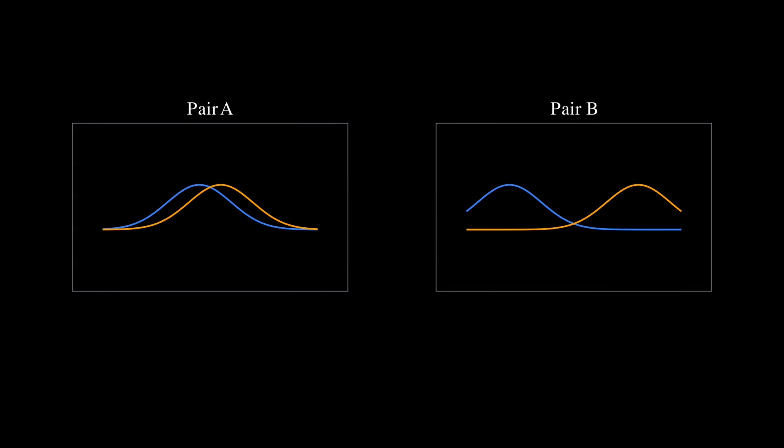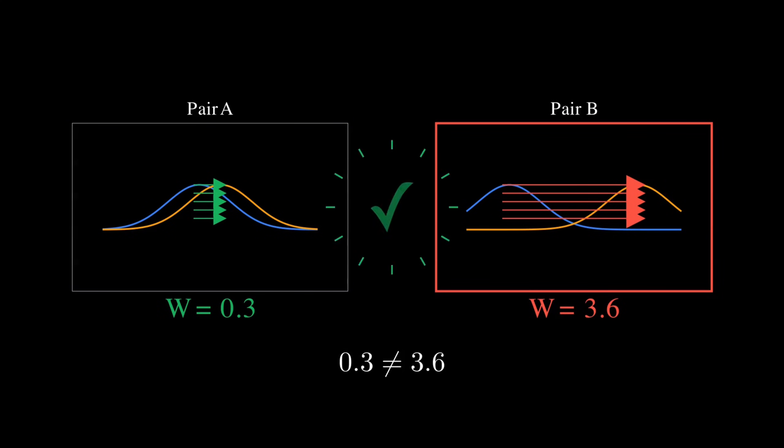Now let's revisit our puzzle. Those slightly shifted distributions, Wasserstein says they're close. Mass only moves a small distance. But the distributions with peaks in opposite corners, Wasserstein says they're far apart because mass has to travel across the entire space. Finally, a metric that respects geometry.